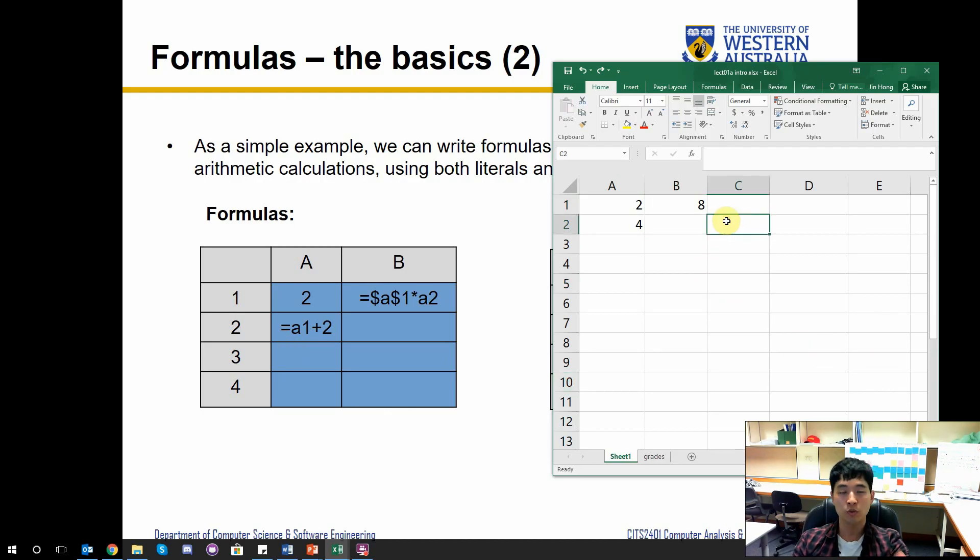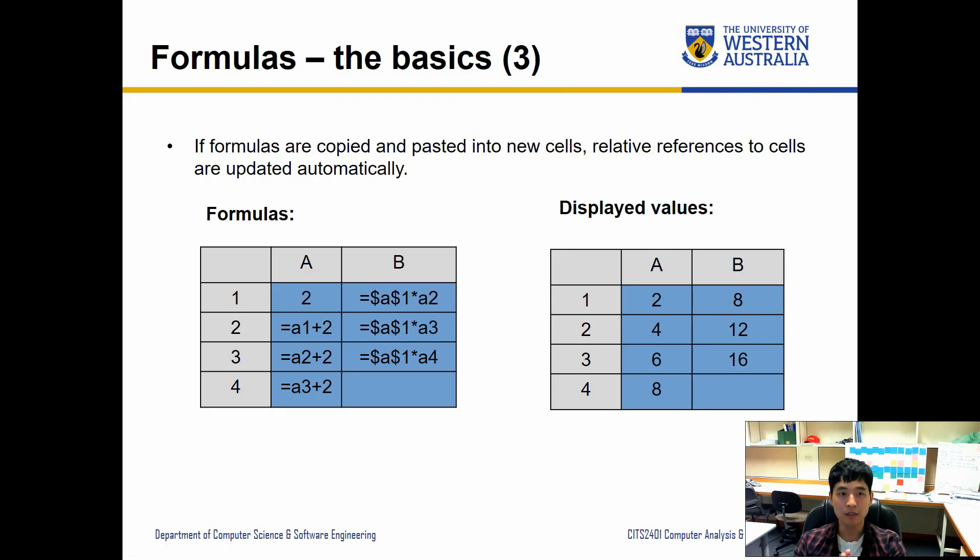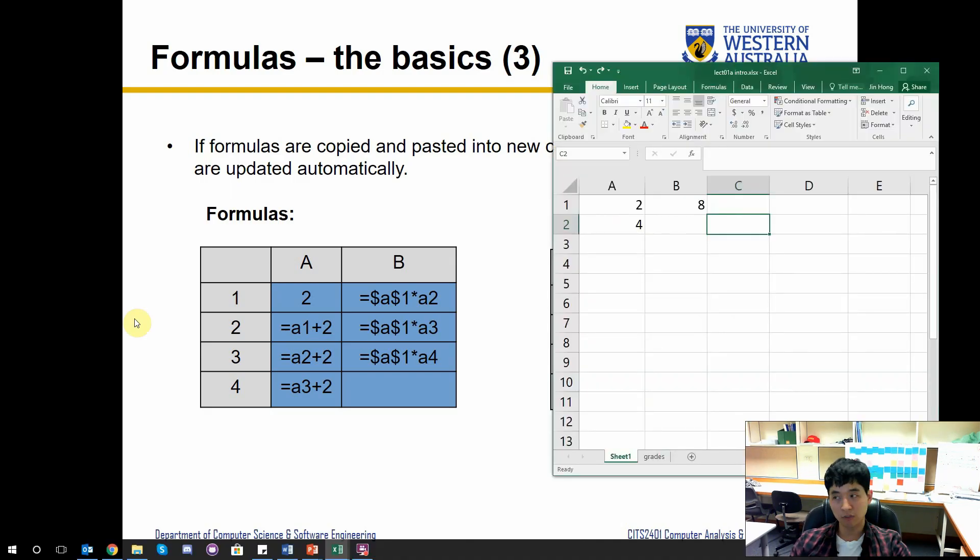Our displayed value is 2, 4 in column A and 8. And then what we're going to do is copy and paste into new cells. We're going to bring down the formulas in those cells down the rows. You can either do Ctrl+C and Ctrl+V for copying and paste, but you can simply grab the corner of the cell and drag it down to how far you want it to be.